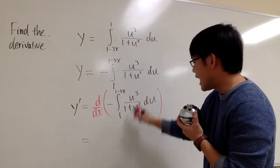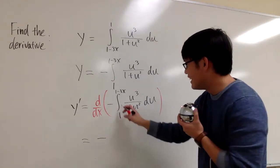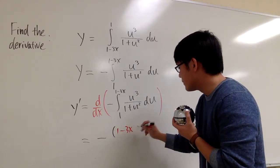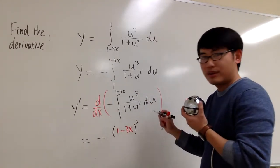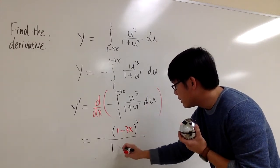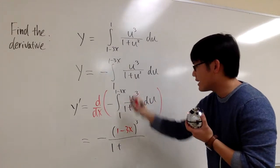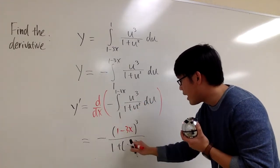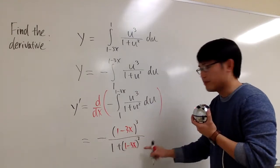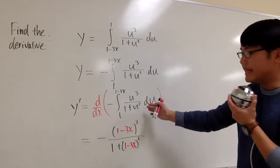So on the top, I will have—well, don't forget the negative. Don't forget this negative first. On the top, I have the u, which becomes 1 minus 3x raised to the third power. And on the denominator, we have 1 plus—I see the u, but u will be replaced with that—1 minus 3x raised to the second power. That part is just a plug-in, but then we are still taking that derivative.